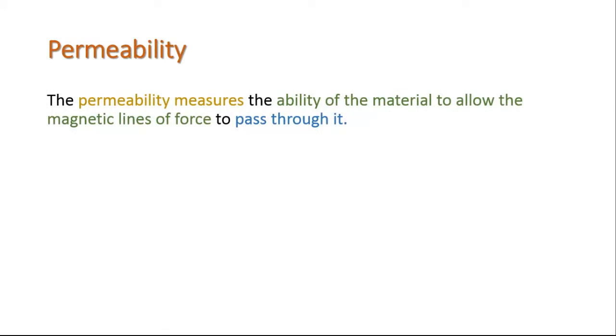Permeability measures the ability of the material to allow the magnetic line of force to pass through it. The symbol of permeability is mu.